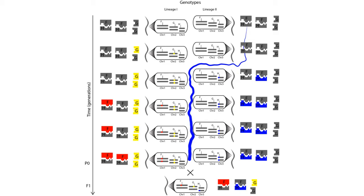Later in time, one individual experiences a new mutation in gene G, shown in yellow, which causes that protein's shape to change. Individuals in this generation are healthy because the new mutation does not affect a cellular process that is important to the organism. In reality, such random mutations have no fitness consequence and occur frequently. Later still, groups of individuals are somehow separated from each other, preventing the two resulting groups from mating. This is shown as the shifting of the course of a river that now physically separates the two populations, or lineages.